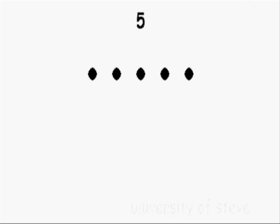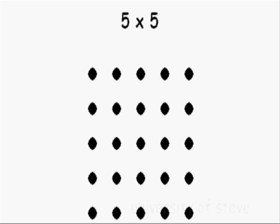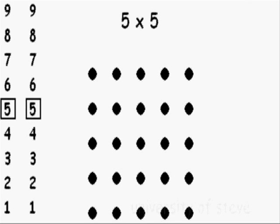This is 1. This is 2. This is 5. This is 2 fives. And this is 5 fives — we call that 5 times 5. 5 times 5 is 25.